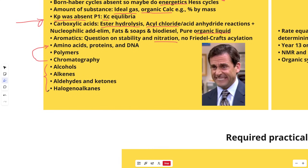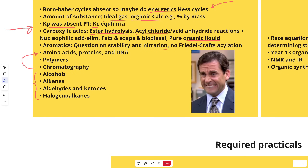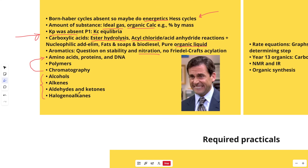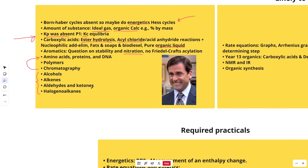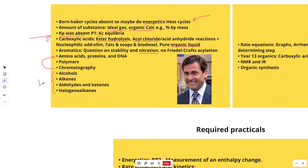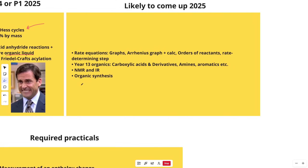Then we have all the year 12 organics — alcohols, alkenes, aldehydes, ketones, and halogenoalkanes. These are probably going to come up because they were largely absent last year. If I was you I would be revising all the super basic year 12 stuff: all the mechanisms, isomerism, E/Z isomerism, observational tests, stuff like that.